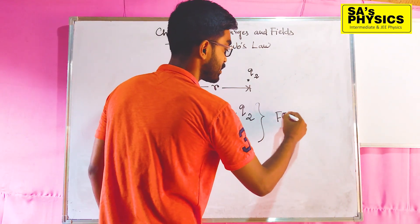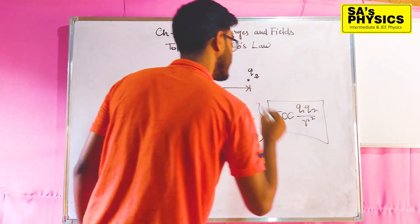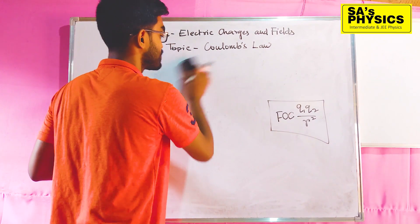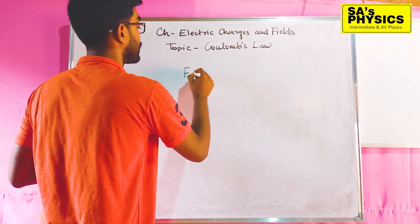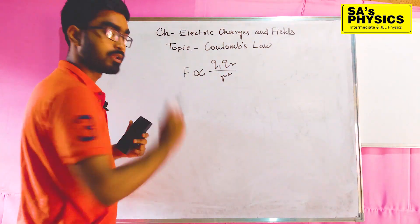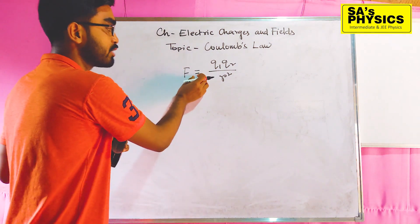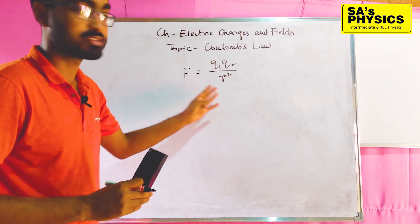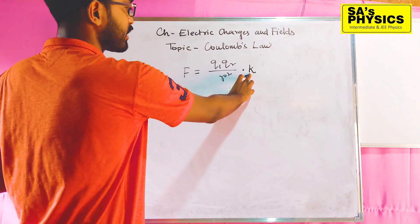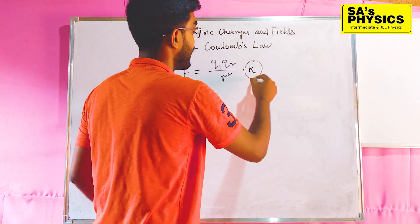So F is proportional to Q1 Q2 by R squared. Now if we replace the proportionality symbol with an equal sign, we need a constant: F is equal to K times Q1 Q2 by R squared. This constant is K. If K value is 1 then Q1 Q2 by R squared equals F. This K is nothing but the electrostatic force constant.